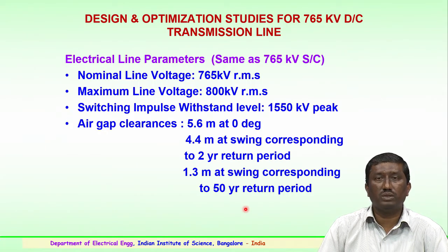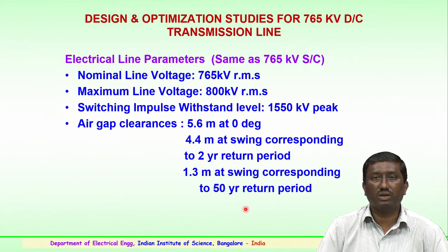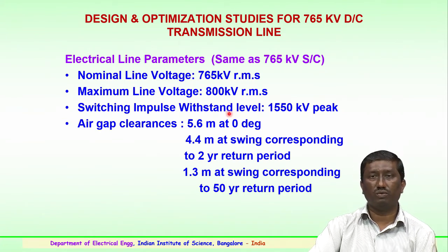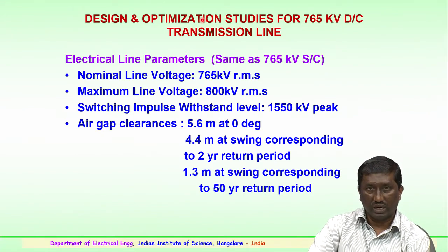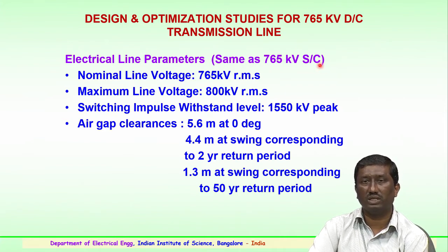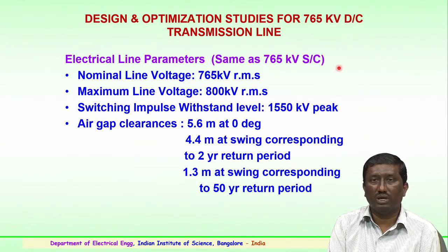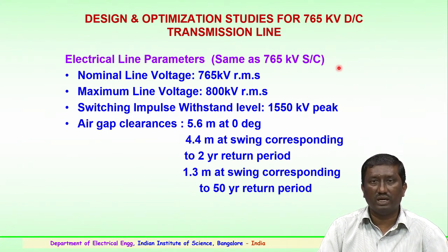The design and optimization studies were carried out for the first line. Electrical line parameters were similar to 765 kV single circuit line, and this was considered when the line was being thought for double circuit. The optimization idea used for the single circuit was adapted for double circuit, where SC is single circuit and DC is double circuit. Design optimization for 765 kV double circuit transmission line was carried out with reference to the single circuit line data which was available.